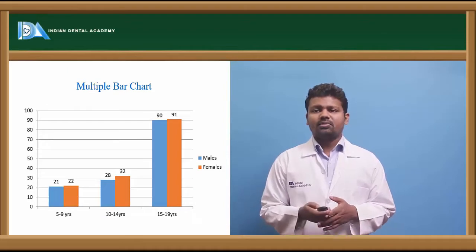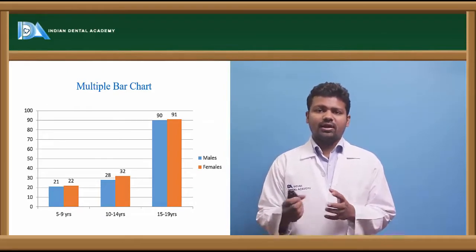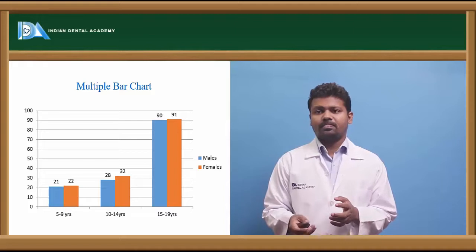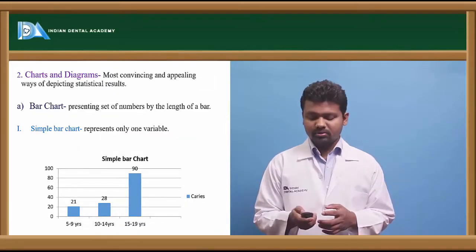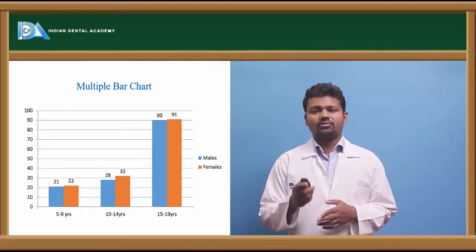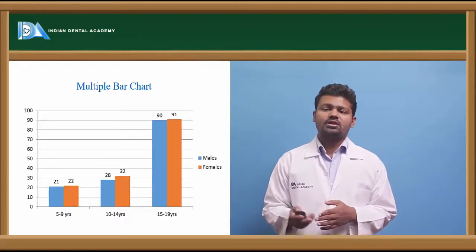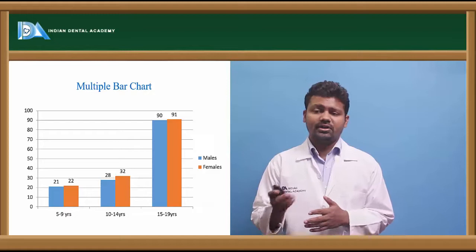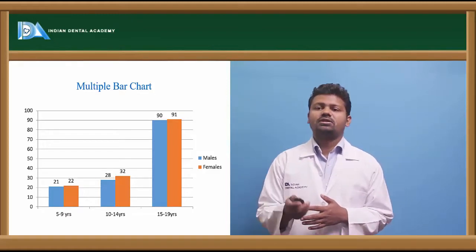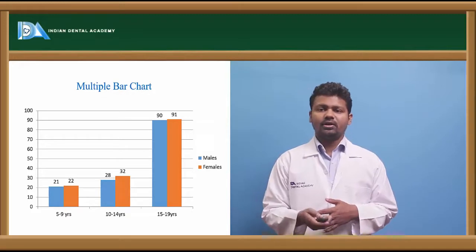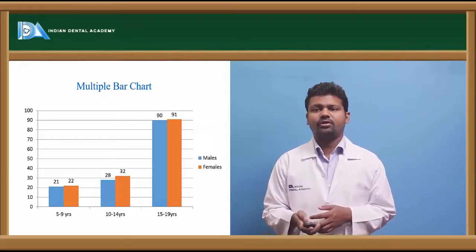The multiple bar chart represents two variables, unlike the simple bar chart which represents only one variable. Different colors are used to make it appealing. For example, male and female ratios can be compared and shown in different bars.